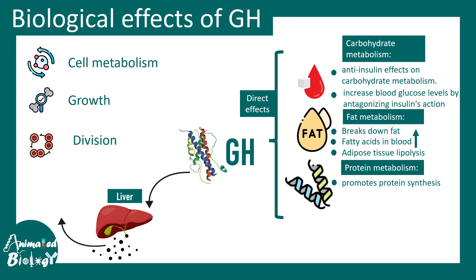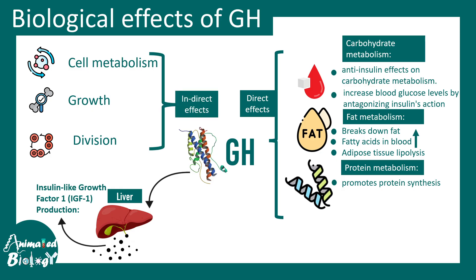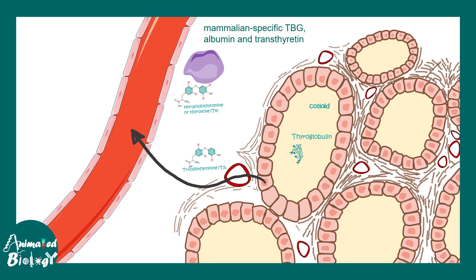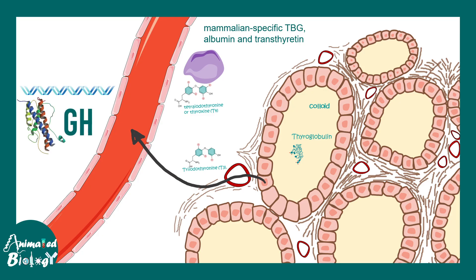Most of the effects imparted by growth hormone are not direct. They are mediated via another protein secreted by the liver known as IGF, or insulin-like growth factor. So the growth, cell metabolism, and cell division effects are actually indirect. Growth hormone also affects thyroid hormone: it promotes production of thyroid-binding protein (TBG), which carries thyroid hormone in the blood and makes it available throughout the body. Since thyroid hormone regulates many aspects of metabolism, it is no wonder that overproduction of growth hormone leads to widespread metabolic problems.